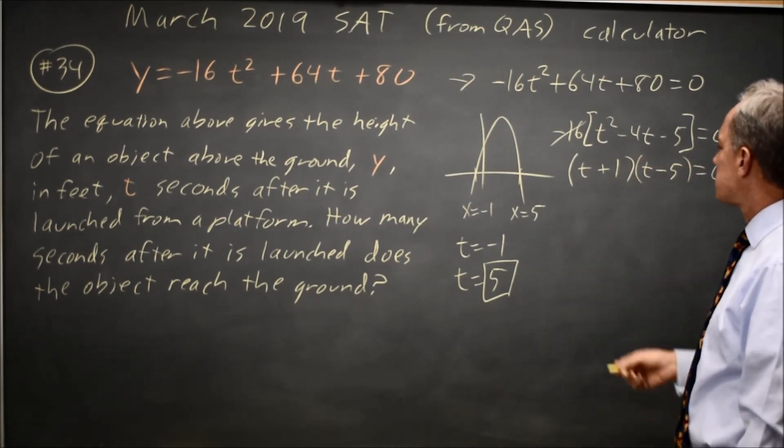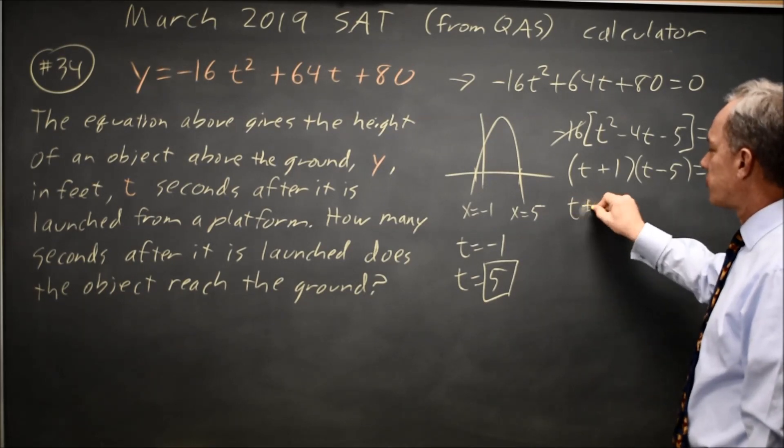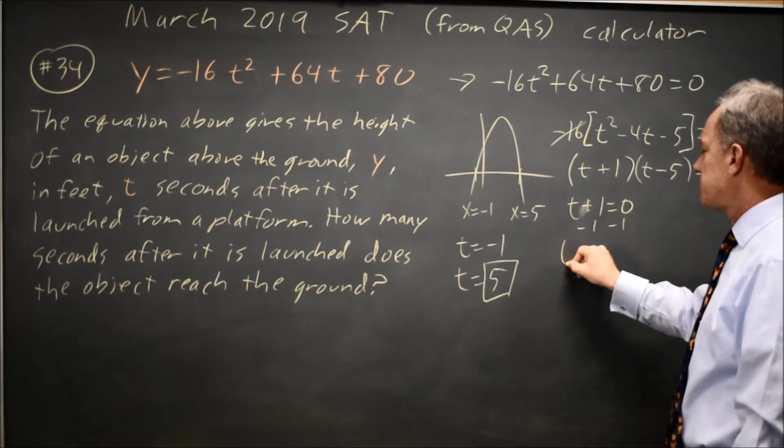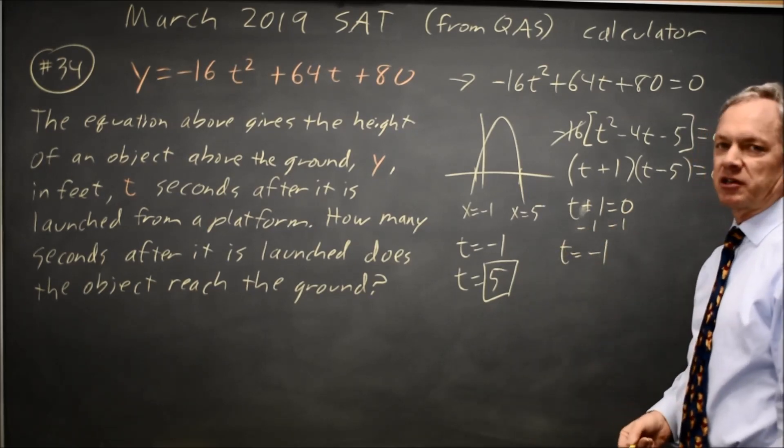So if a product equals 0, either the first factor is 0, t plus 1 equals 0, subtract 1 from both sides, t equals negative 1, which I found on the graph.